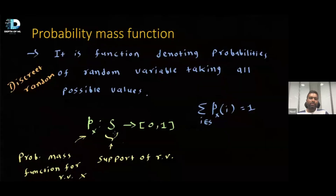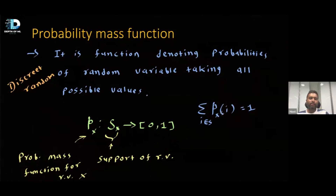We have defined a probability mass function whose domain is the support of that random variable, mapping to real values in [0,1]. Whenever the support is referred to, we will write something like S(X), which denotes we are referring to the support of random variable X. This support has a nice property — the probability mass function should sum to 1 for every possible value in the support S(X).